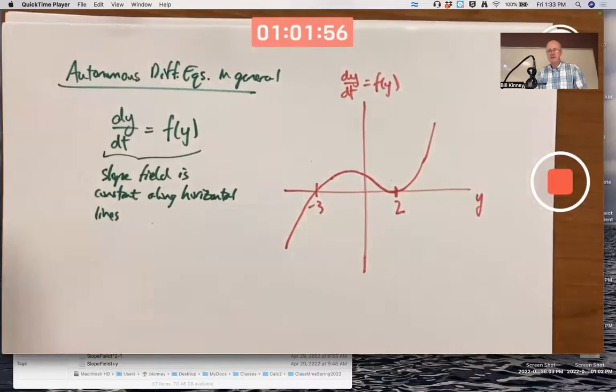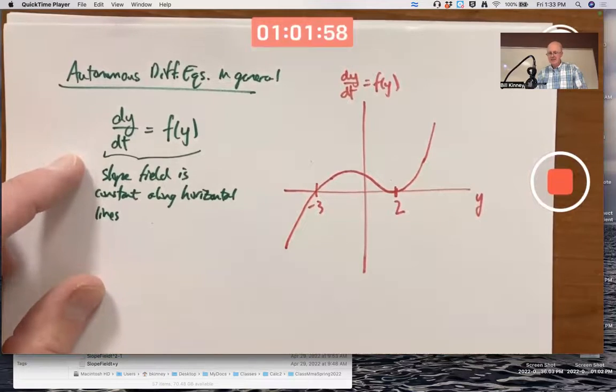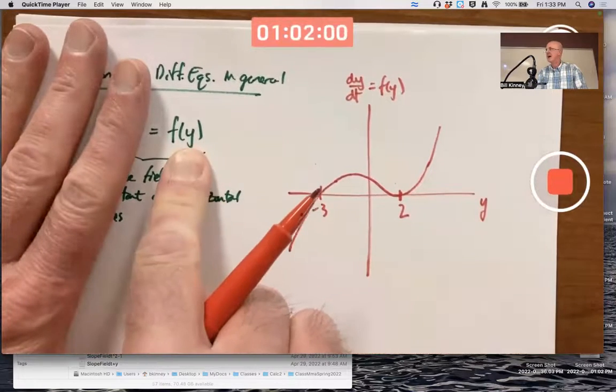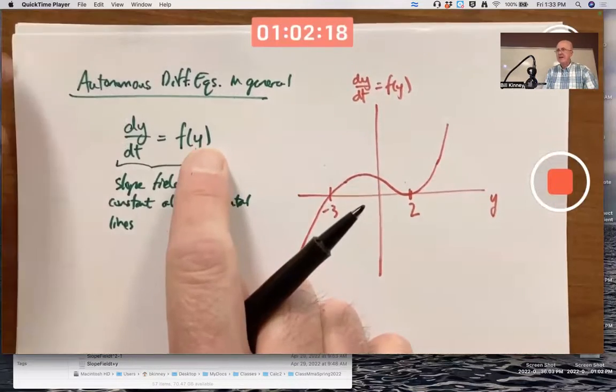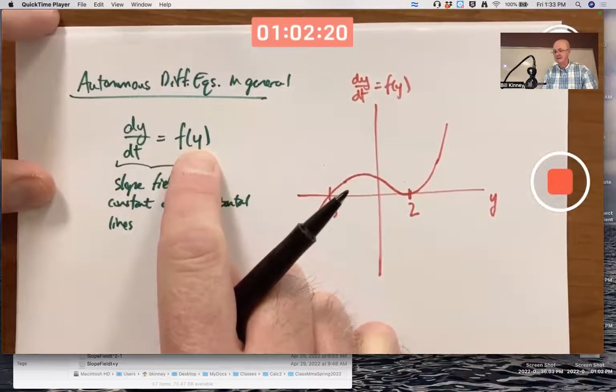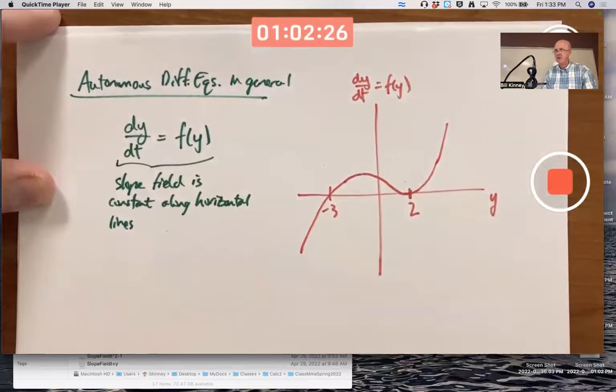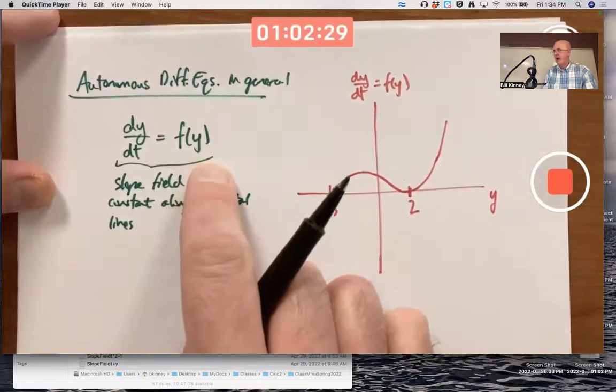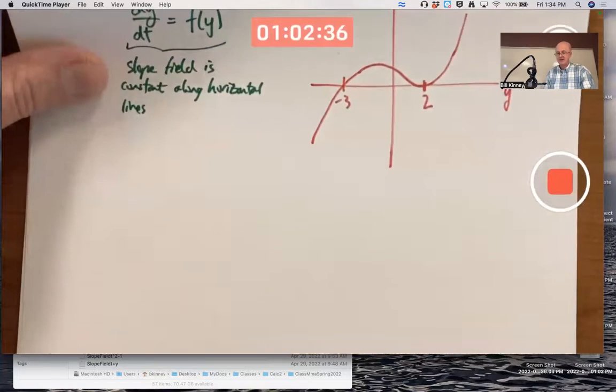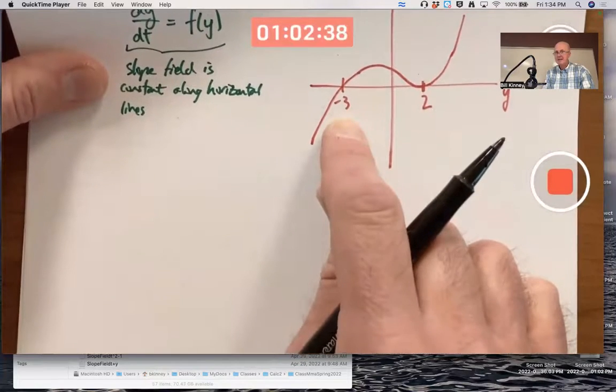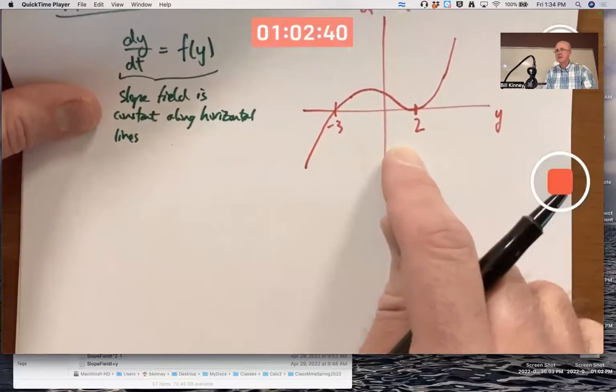What would solutions of the differential equation look like if this is the graph of this right-hand side function? If it were an f(t) on the right-hand side and we were graphing this as a function of t, you'd be integrating a cubic to get a fourth degree. But that's not what's going on here. It's got an f(y), it's different. In fact, when y is negative 3 or 2, where this function equals zero...